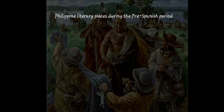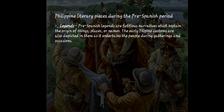Now let's look at the Filipino literary pieces during the pre-Spanish period. The first literary piece is legends. Legends in the pre-Spanish period are fictitious narratives that explain the origin of things, places, or names. The early Filipino customs are also depicted in them as they entertained people during gatherings and occasions.